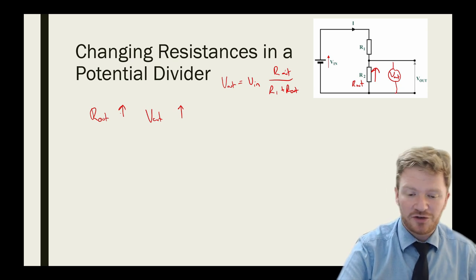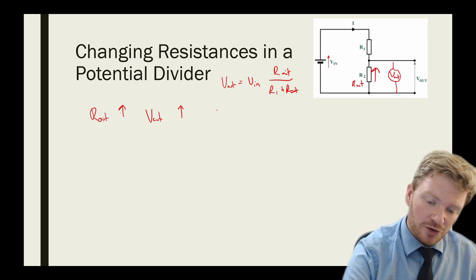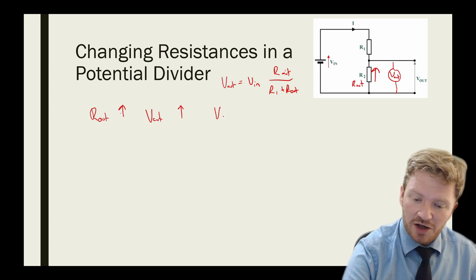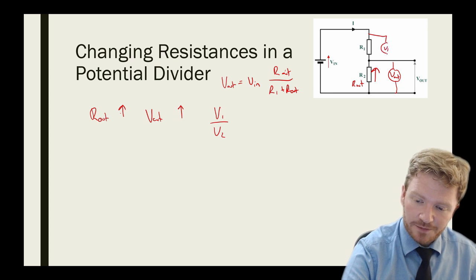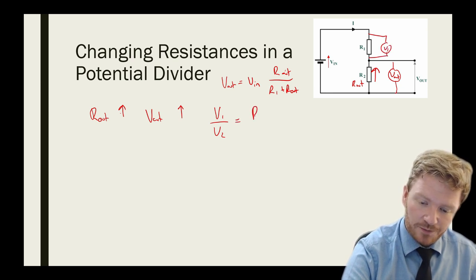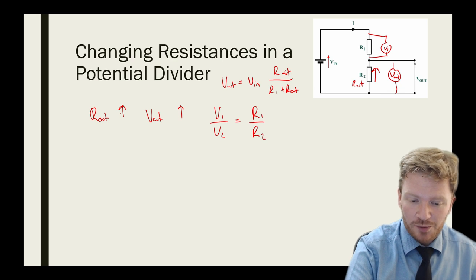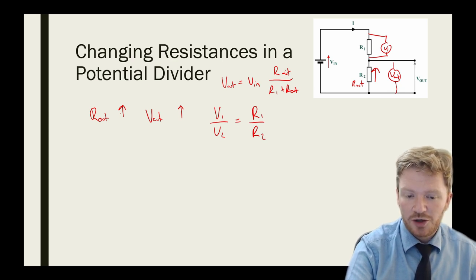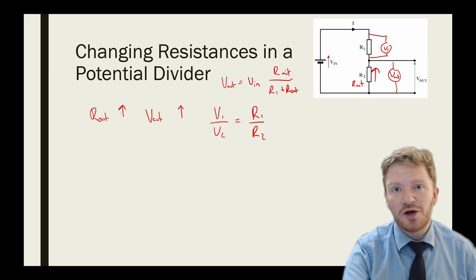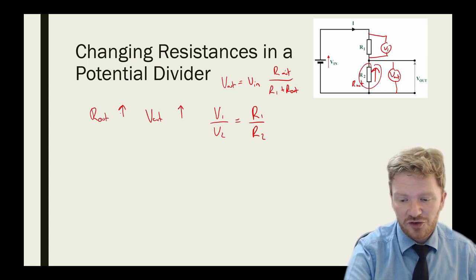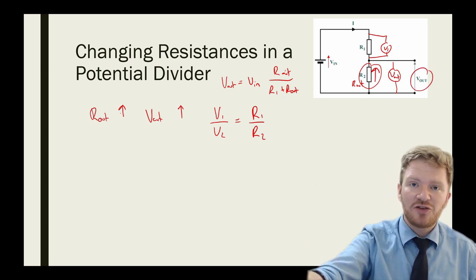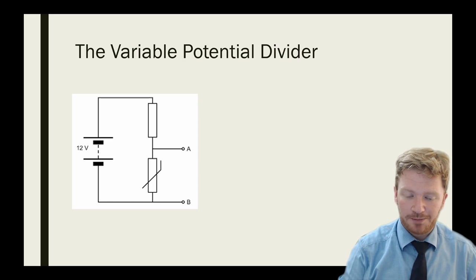Another way of thinking about a potential divider is we could do it by ratios. So we could say V1 over V2, so this would be V1 here, V1 over V2 is equal to R1 over R2. And you can see then there quite nicely. If I increase R1, V1 will increase. If I increase V2, V2 will increase. In other words, if the resistance of this resistor goes up, this voltage goes up. And this is where sensing circuits become really important.